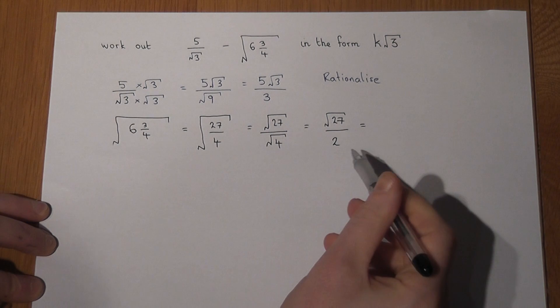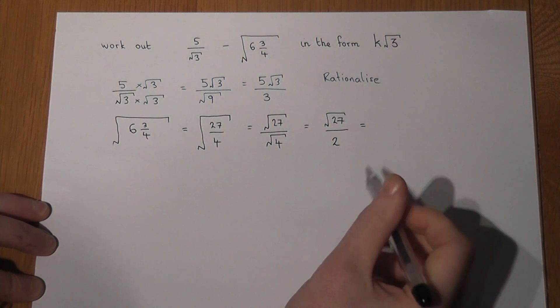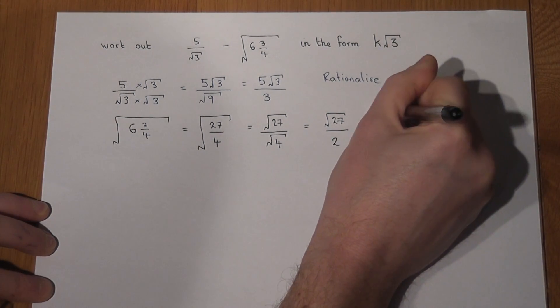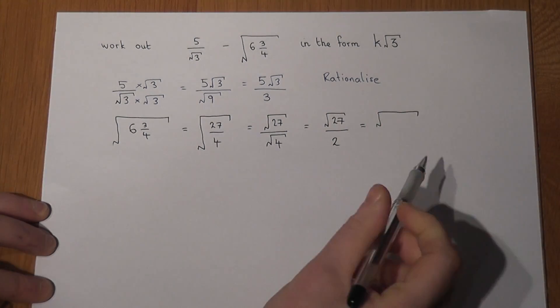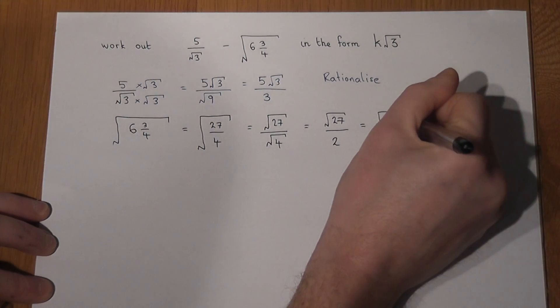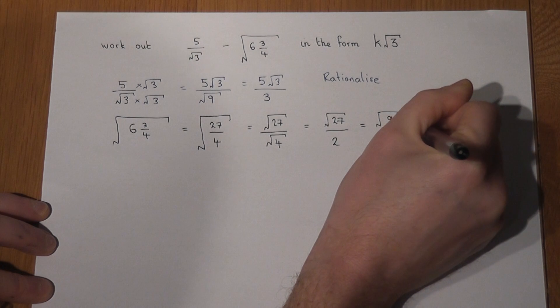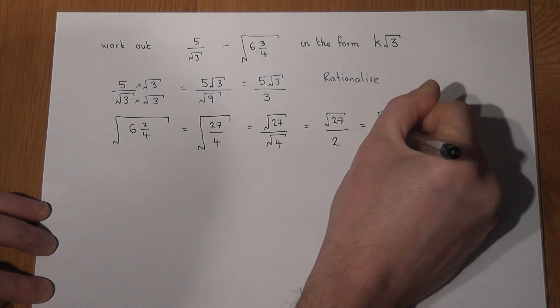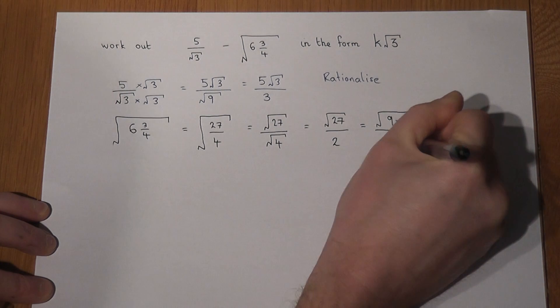Now we know our square numbers are 1, 4, 9, 16, 25, etc. And I know that 9 which is a square number is also a factor of 27. So I can write it as 9 lots of 3. 9 times 3 is 27.